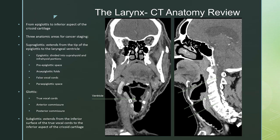For a brief review of the CT anatomy, the larynx consists of the structures from the inferior aspect of the epiglottis to the inferior aspect of the cricoid cartilage. There are three anatomic areas for cancer staging. The supraglottic region extends from the tip of the epiglottis to the laryngeal ventricle, which you can see best on the coronal view, where you have that goblet or hourglass shape. The ventricle is the space between the false vocal cords and the true vocal cords.